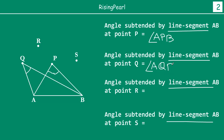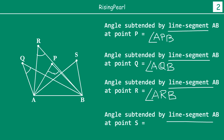Similarly, the angle subtended by the line at point R will be angle ARB. And finally, the angle subtended by the line AB at point S will be angle ASB.